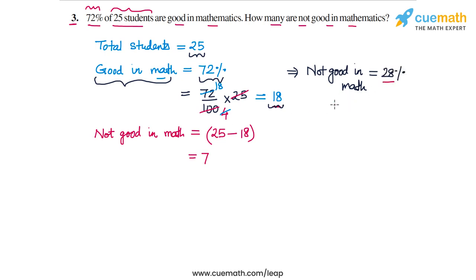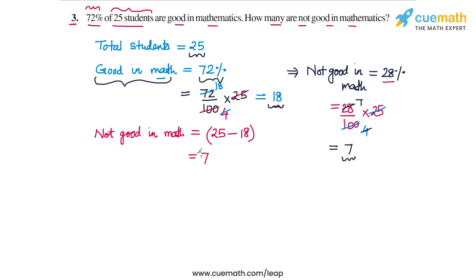Now we convert 28% into an absolute number: 28/100 of 25. 100 divided by 25 is 4, and 28 divided by 4 is 7. So the number of students not good in mathematics is 7 — the same answer as the first approach.